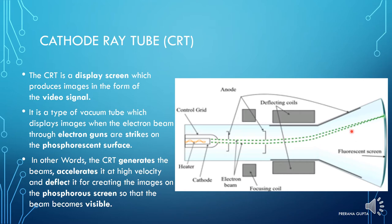The part called the electron gun throws the electron beam towards the fluorescent screen. This screen is called the fluorescent screen, and the material used here is phosphorus — it is called the phosphorescent surface. The CRT generates the beams.